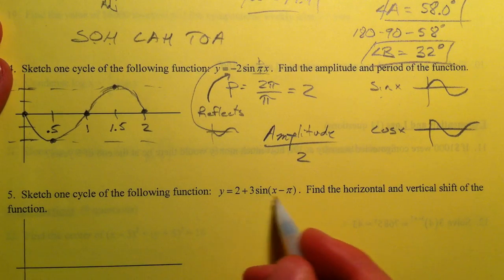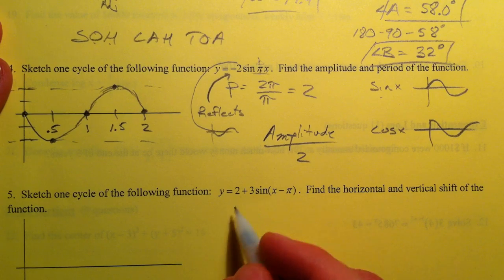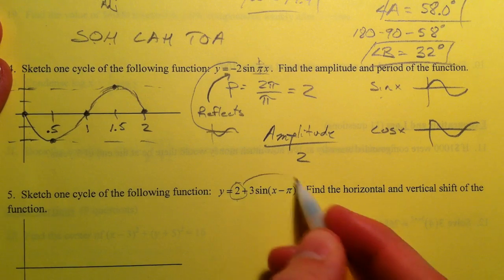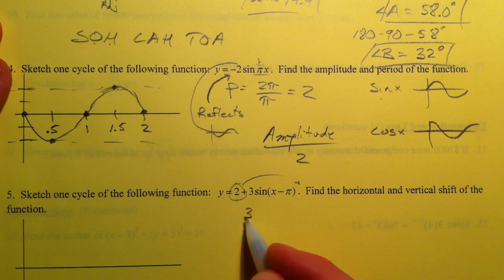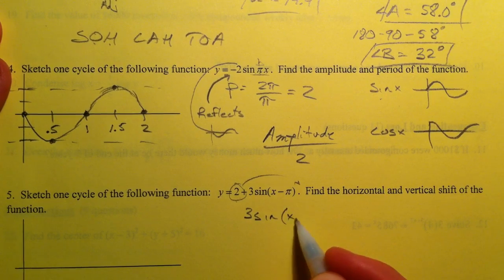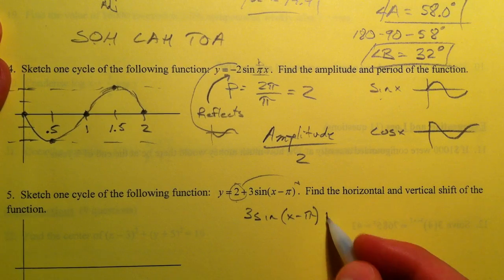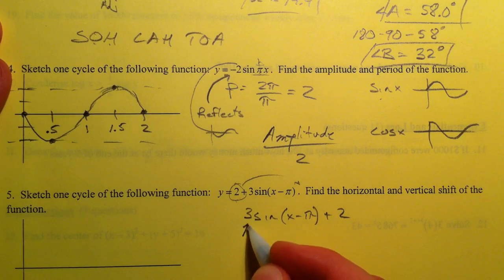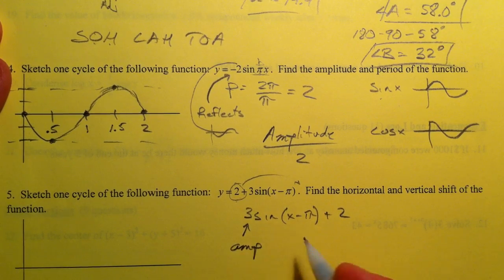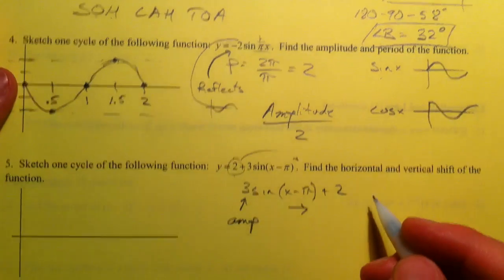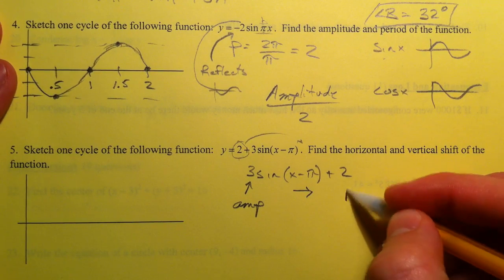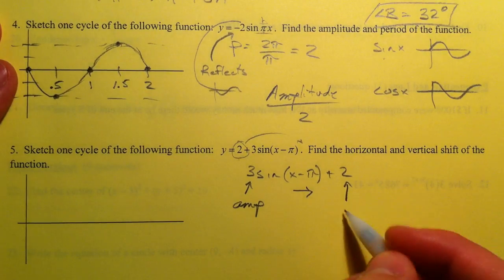On this one, 2 plus 3 times the sine. This 2 can just as well go on the back. And it can be 3 sine of x minus π plus 2. It does the same thing. So the 3, this is our amplitude. This minus π, opposite of what we think. So it's going to shift it to the right π. And the plus 2 is going to shift it up 2. And so this is our midline.